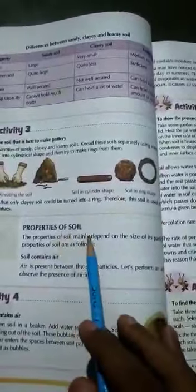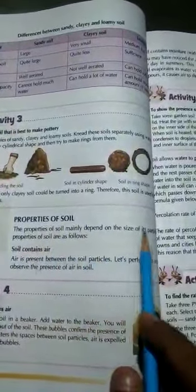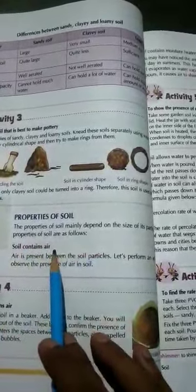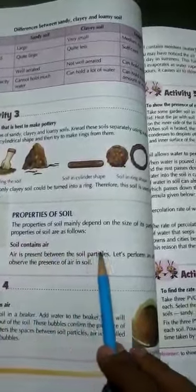Next is properties of soil. The properties of soil mainly depend on the size of the particles. Properties of soil are as follows. Soil contains air. Air is present between the soil particles.